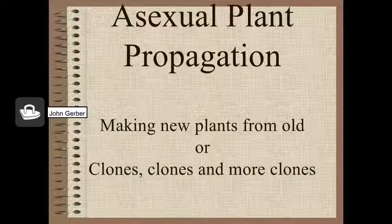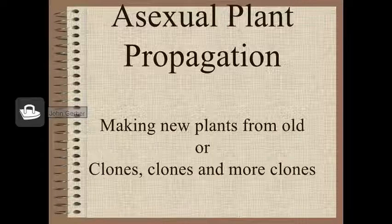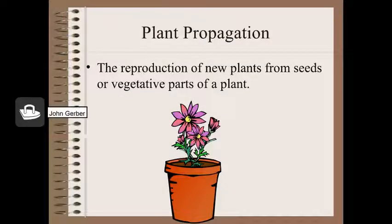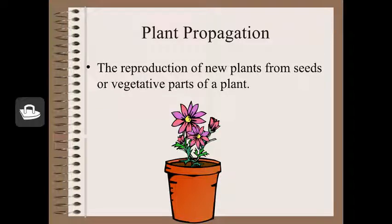Turning now from sexual reproduction of plants through genetics, we look at asexual and non-sexual plant propagation, or making new plants from old. This is a pretty practical unit. Plants can be propagated or grown from seeds, of course, but they also can be grown from different parts of mother plants. Plants made from cuttings of older plants — this is called asexual reproduction.